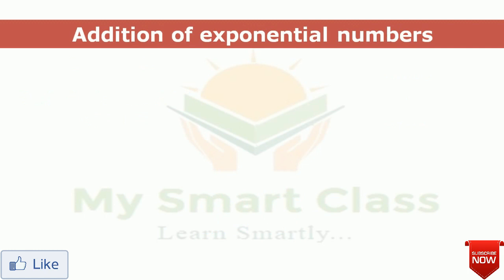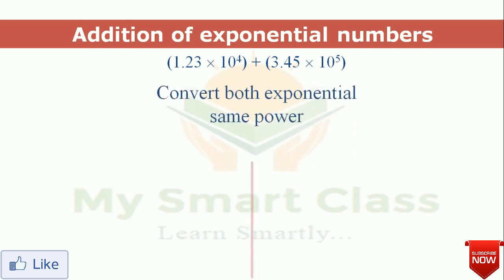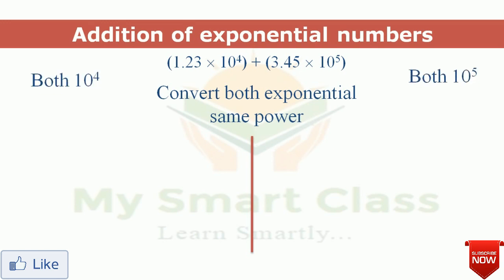Now let's consider addition of scientific notation numbers. Example: 1.23 × 10⁴ plus 3.45 × 10⁵. We must convert both numbers to the same power. We have two options: convert both to 10⁴, or both to 10⁵. Let's try both methods. First, we'll convert both to 10⁴. Since 1.23 × 10⁴ is already at that power, we only need to convert 3.45 × 10⁵.